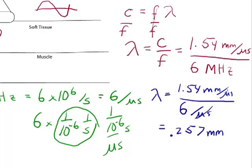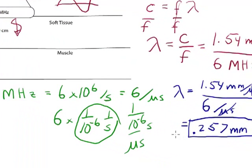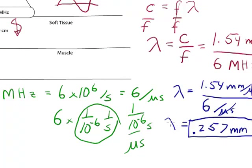Per microsecond cancels on the top and the bottom. So 0.257 millimeters. So a 6 megahertz transducer in soft tissue, a single cycle wavelength, the length of a single cycle wave, is going to be 0.257 millimeters.